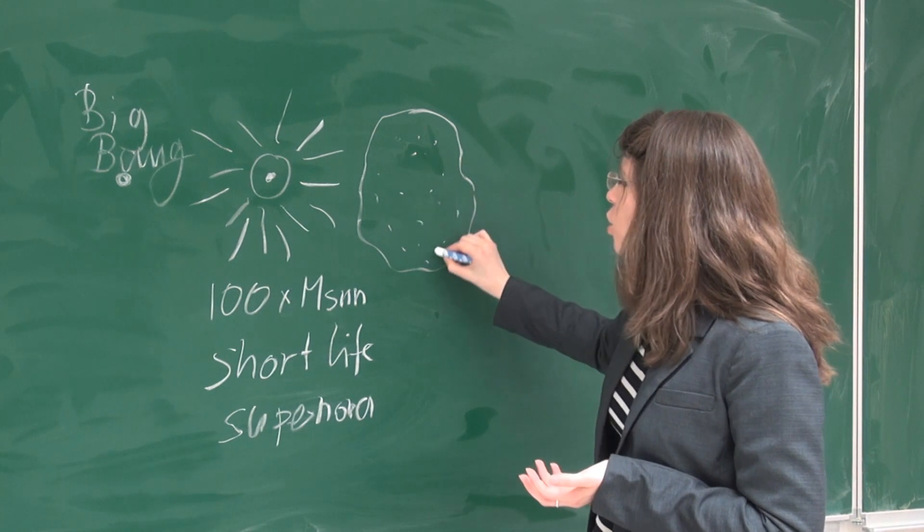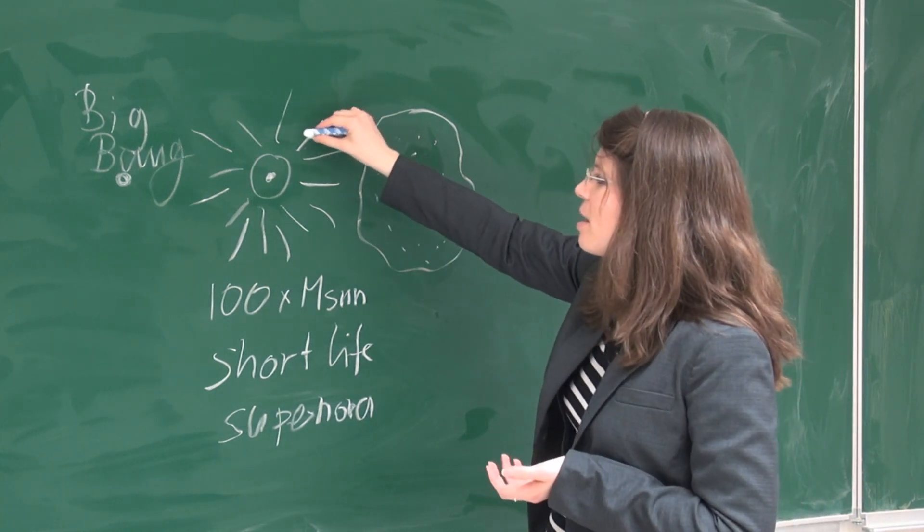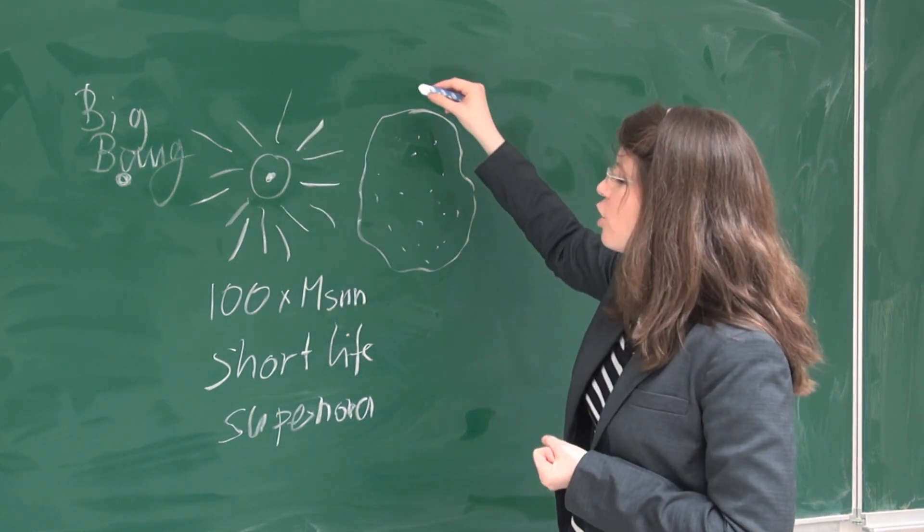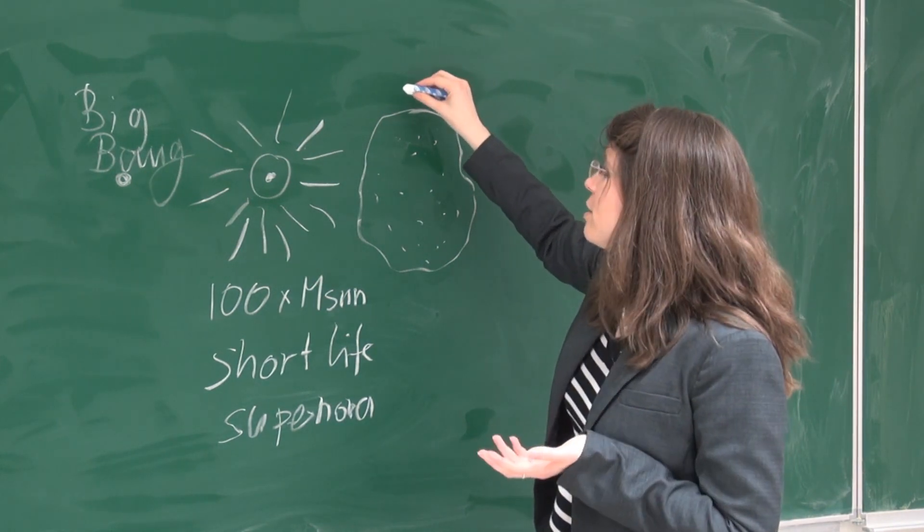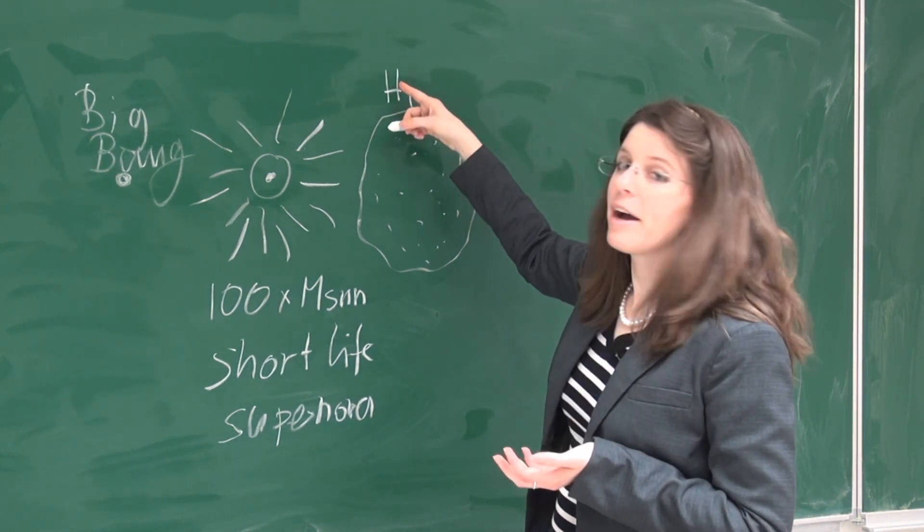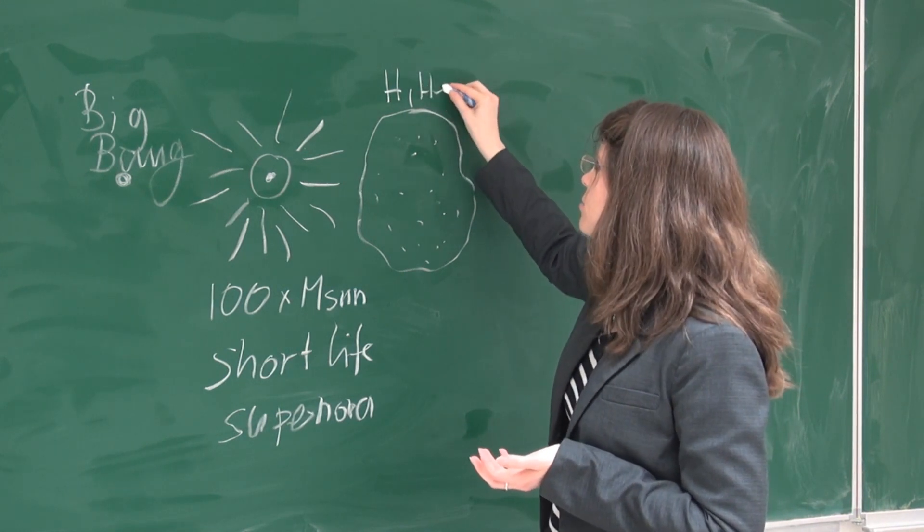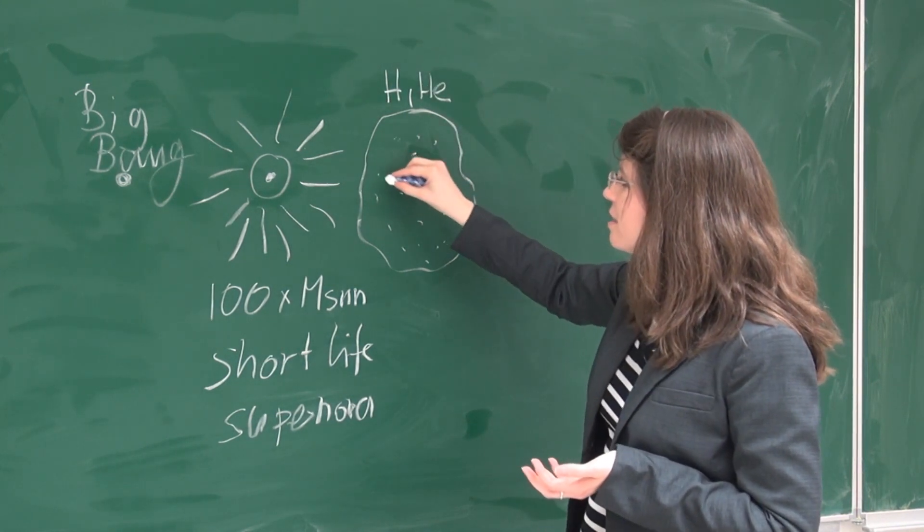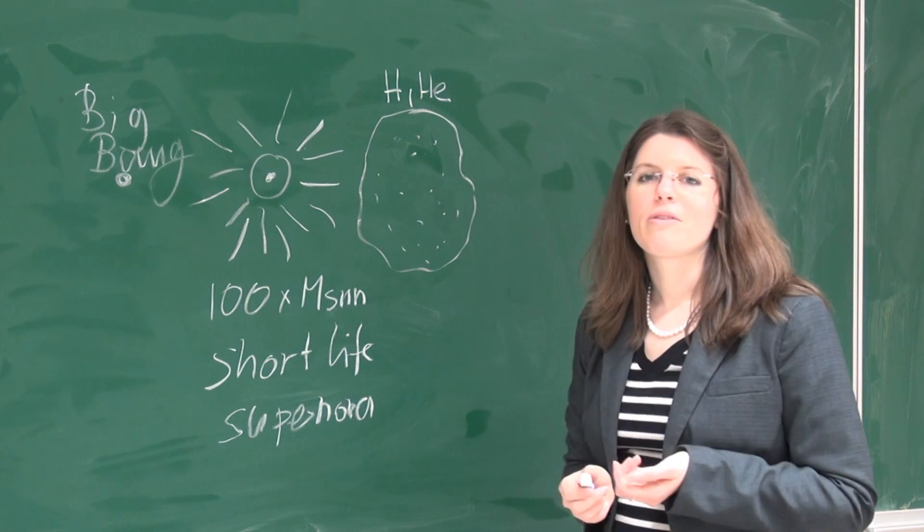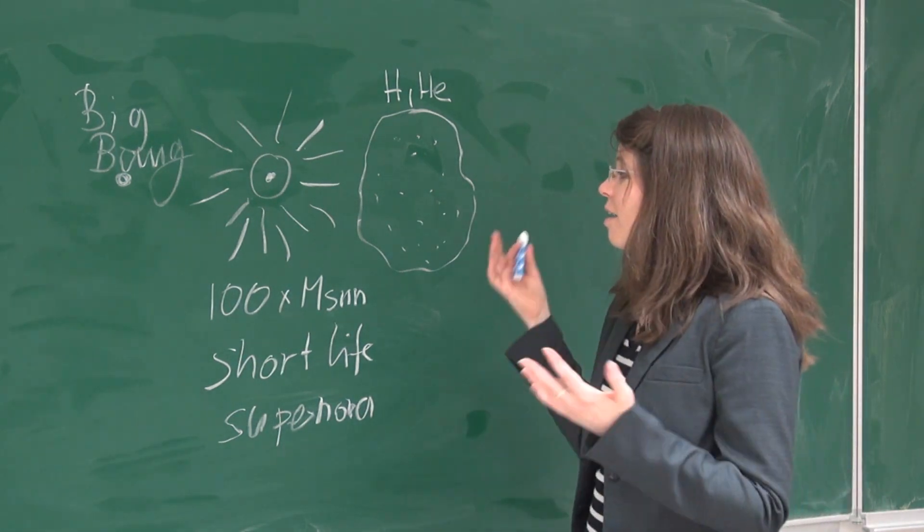And the surrounding gas cloud got polluted and enriched just a little bit by all these elements that came out of the supernova explosion. So very early on in the universe, we had gas that consisted of hydrogen and helium and just a tiny little sprinkle of all these other elements.